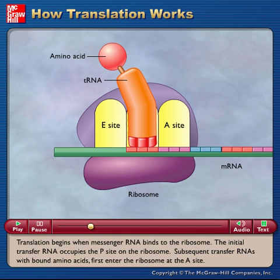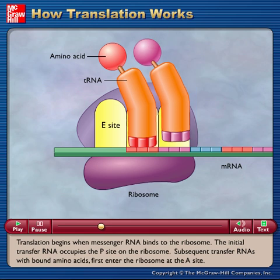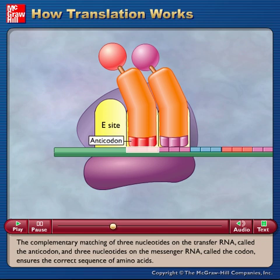Subsequent transfer RNAs with bound amino acids first enter the ribosome at the A site. The complementary matching of three nucleotides on the transfer RNA called the anticodon and three nucleotides on the messenger RNA called the codon ensures the correct sequence of amino acids.